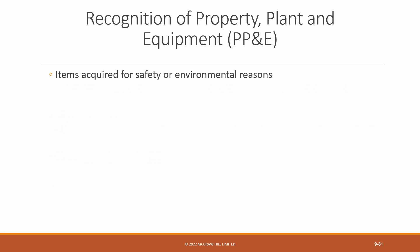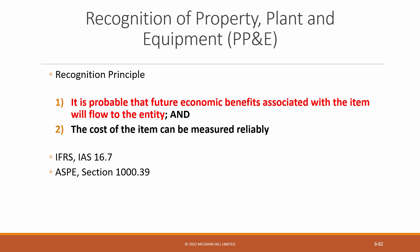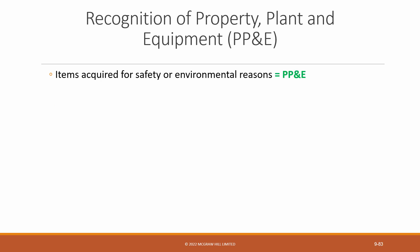Finally, there are items which are required for safety or environmental reasons, such as pollution reduction equipment or mandatory air emission testing equipment. Note that these costs do not directly increase the future economic benefit, nor is the benefit likely to flow to the entity — they don't meet the first criteria. However, these costs are recognized as part of PP&E because they are necessary for the entity to obtain the future economic benefit from all their other assets. Without the required safety or environmental equipment, they would not be permitted to continue in business. For that reason, any acquisitions for the purpose of safety and environmental reasons are capitalized as part of PP&E.